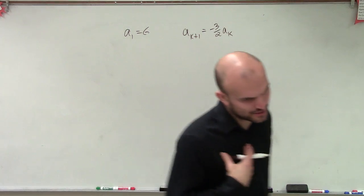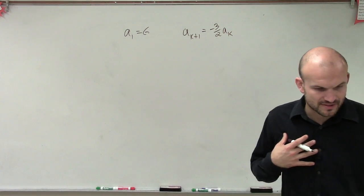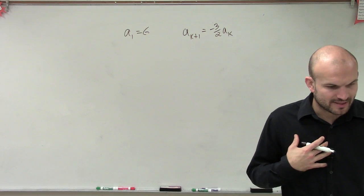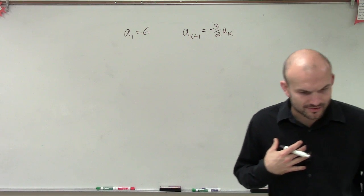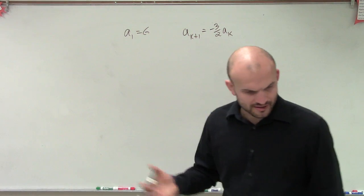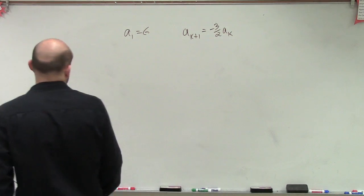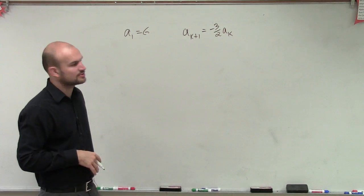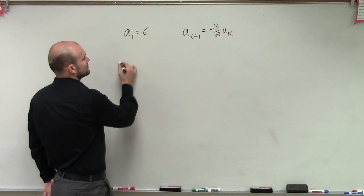So what this problem is asking us to do is write the first four terms of the geometric sequence, and then determine if the common ratio write the end term of the sequence as a function. Actually, we already have the function of n. So what we're going to do for this problem is we're just going to plug in and find the first four terms.